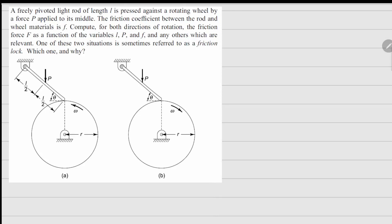This one is problem 1.25. It says a freely pivoted light rod is pressed against a rotating wheel, and there's a force P applied, which is right at the center here. We need to compute the friction force at this point as a function of other parameters for two cases.